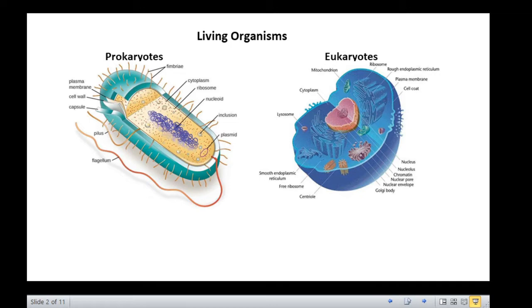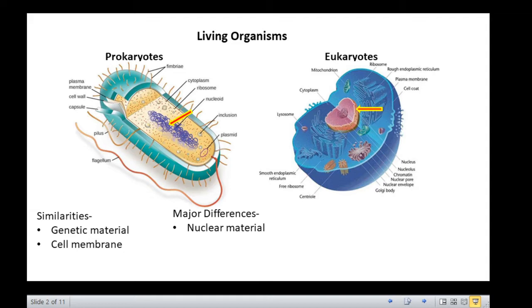Prokaryotic and eukaryotic cells have many similarities. They both have DNA as the genetic material and are bounded by a cell membrane. But they also have some very prominent differences. The most important being that prokaryotic DNA is not bounded by a nuclear membrane, whereas eukaryotes have a well-defined nucleus which is membrane bound. Also, eukaryotic cells have a number of membrane-bound organelles like mitochondrion, endoplasmic reticulum, Golgi bodies and lysosomes, but prokaryotes lack them.